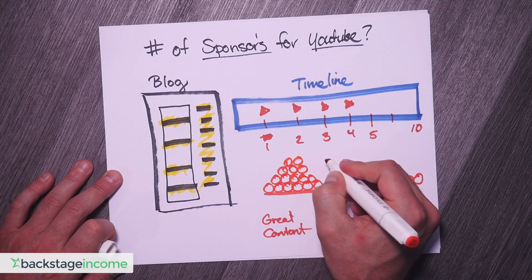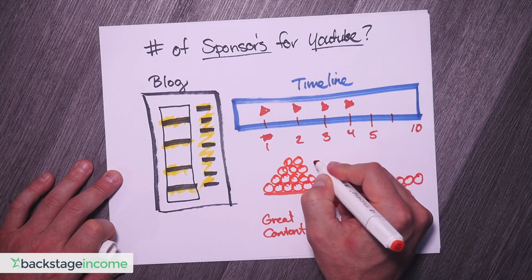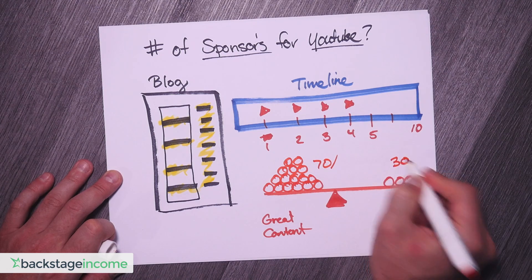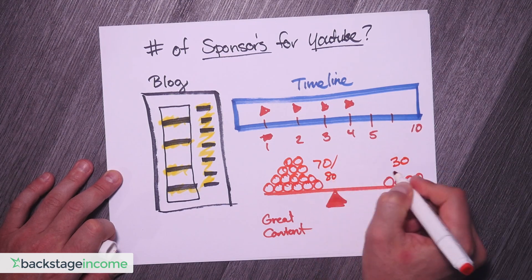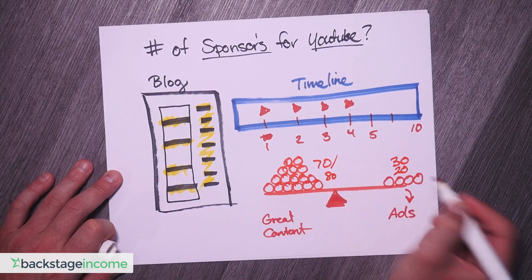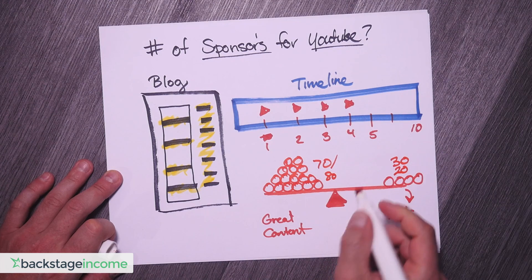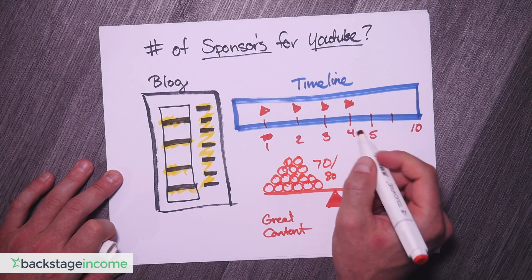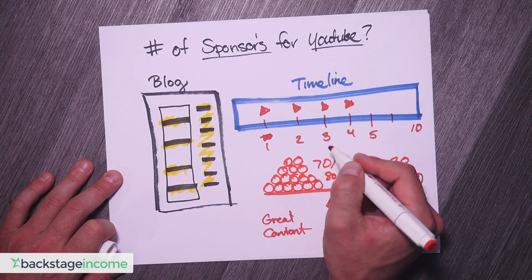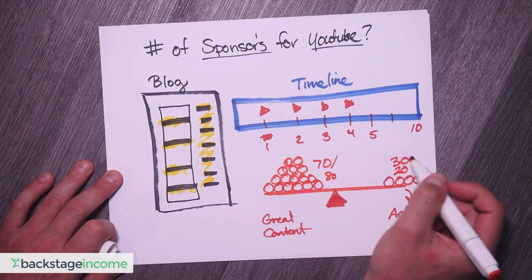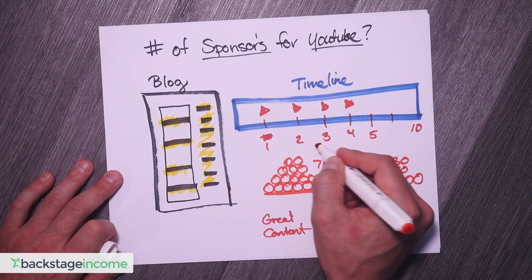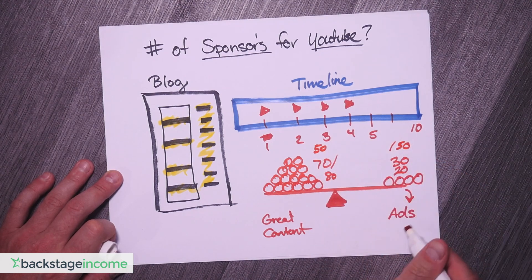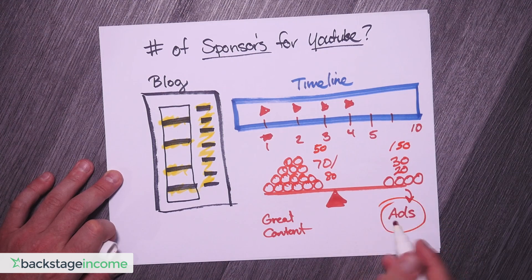I would say a good 70/30 mix is good, or 80/20 if you want to push more great content. If you're at the beginning stages and you're trying to make a couple of extra bucks because you've got a job and you just need to make some extra money, you could do a 50/50 approach, but remember you're then pushing more of the ads.